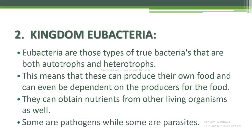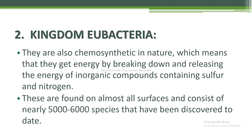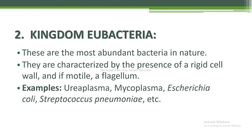Eubacteria are true bacteria that are both autotrophs and heterotrophs — they can produce their own food and can also be dependent on producers. They can obtain nutrients from other living organisms; some are pathogens while some are parasites. They are also chemosynthetic in nature, getting energy by breaking down inorganic compounds containing sulphur and nitrogen. These are found on almost all surfaces and consist of nearly 5,000 to 6,000 species discovered to date. They have a rigid cell wall and, if motile, a flagellum. Examples include Ureaplasma, Mycoplasma, Escherichia coli, and Streptococcus pneumoniae.